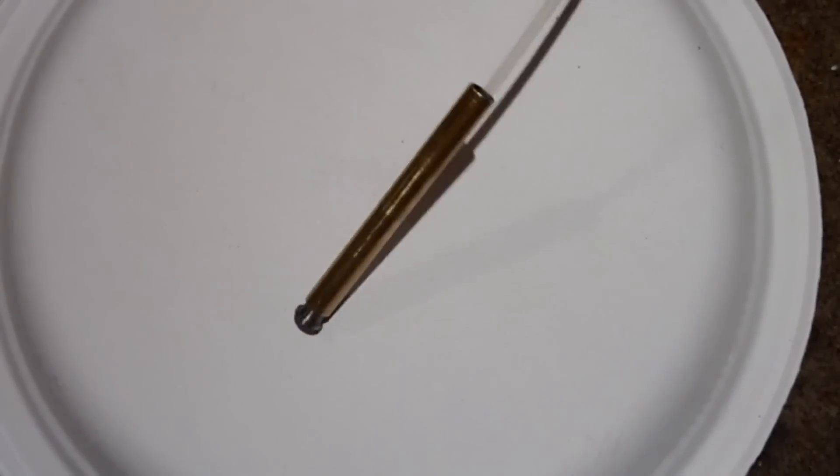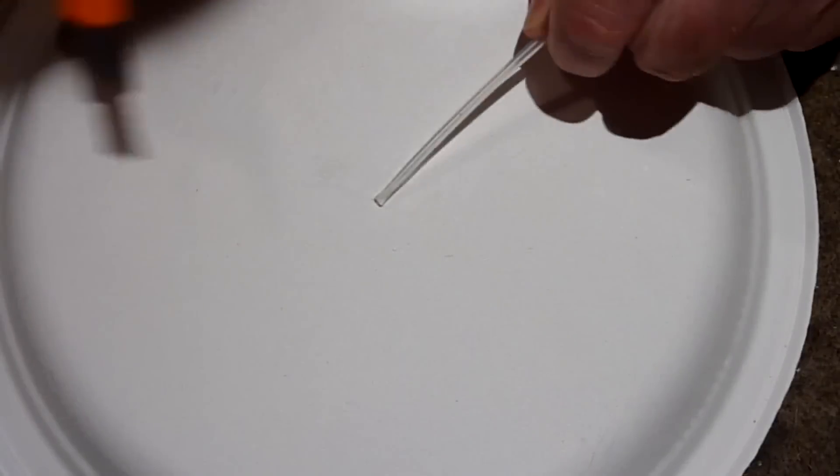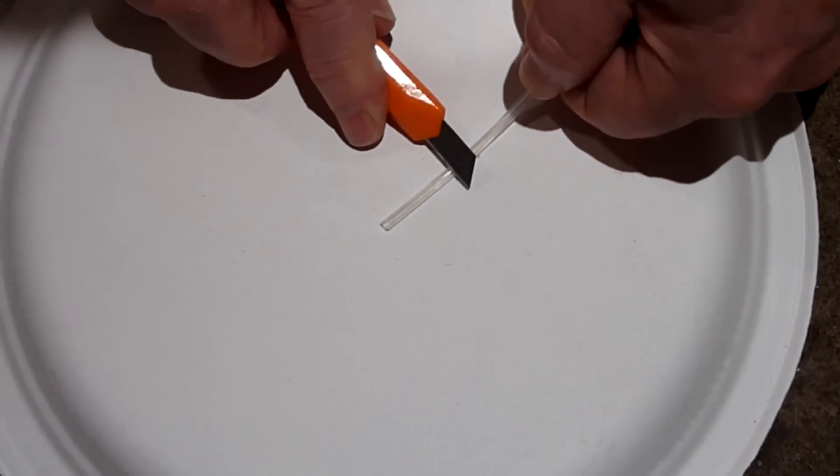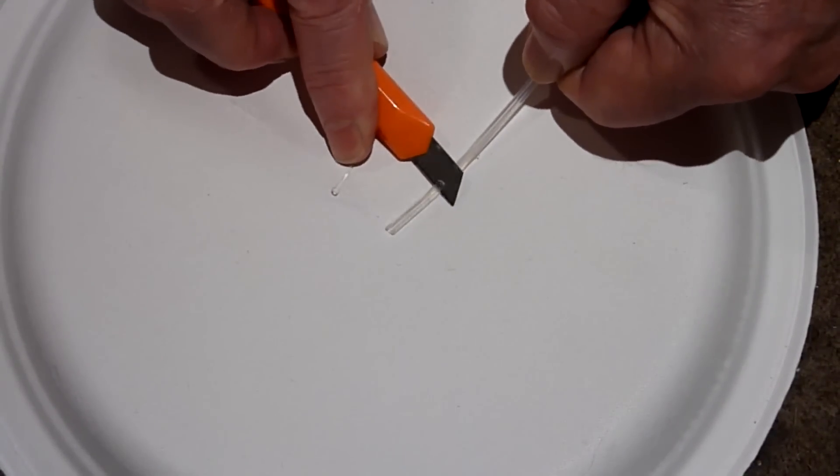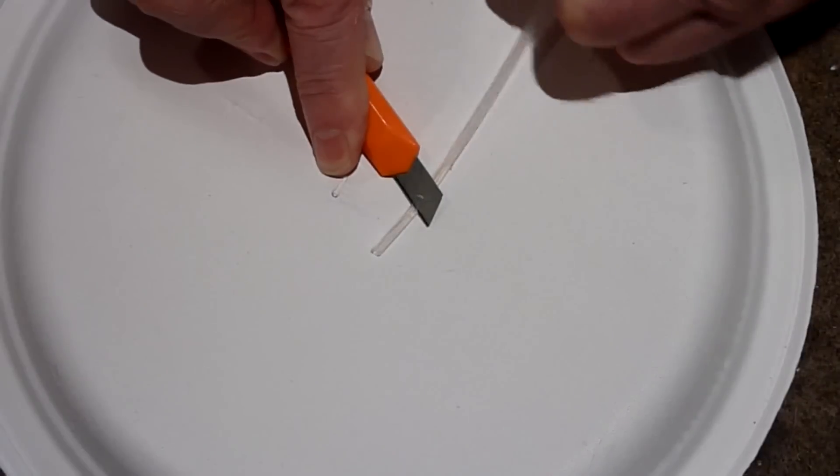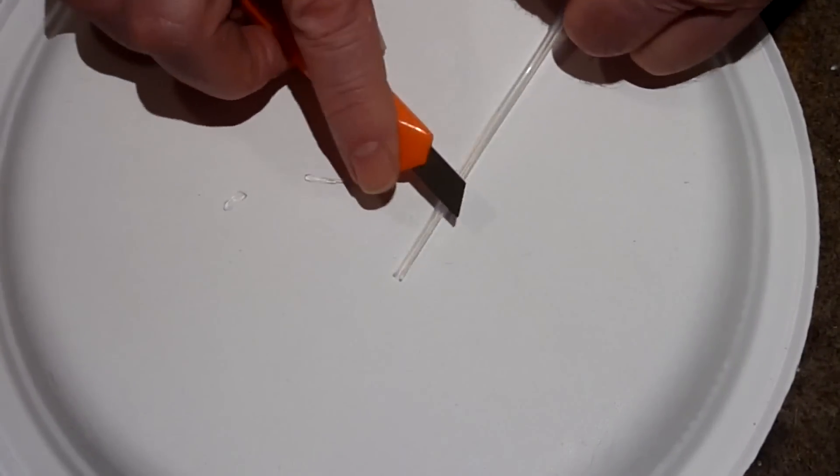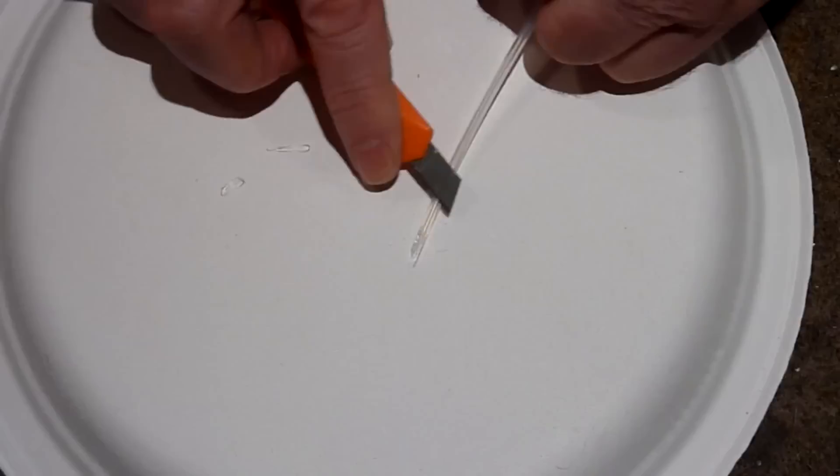To connect the tubing to a fitting, first pare the tube down until it's relatively thin, because you'll need to thread it through the adapters.